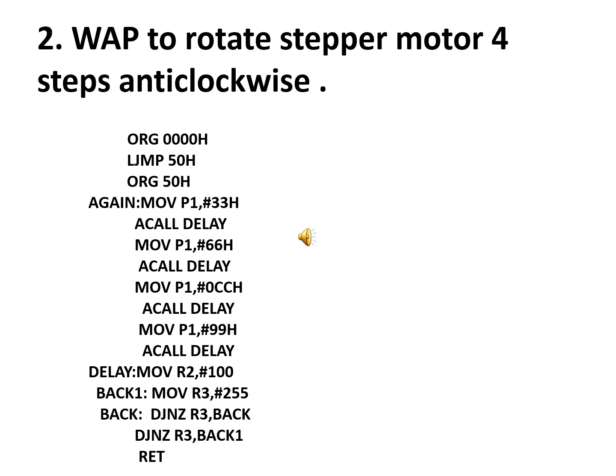The second program: write an assembly language program to rotate the stepper motor four steps in the anticlockwise direction — not continuous. For anticlockwise rotation, the first sequence is 33 moved to port 1, followed by a delay call. When 33 is rotated left, the next sequence is 66, then CC, then 99, each followed by a delay call. There is no SJMP repeat because this is not a continuous rotation — only the sequence order differs from the clockwise program.